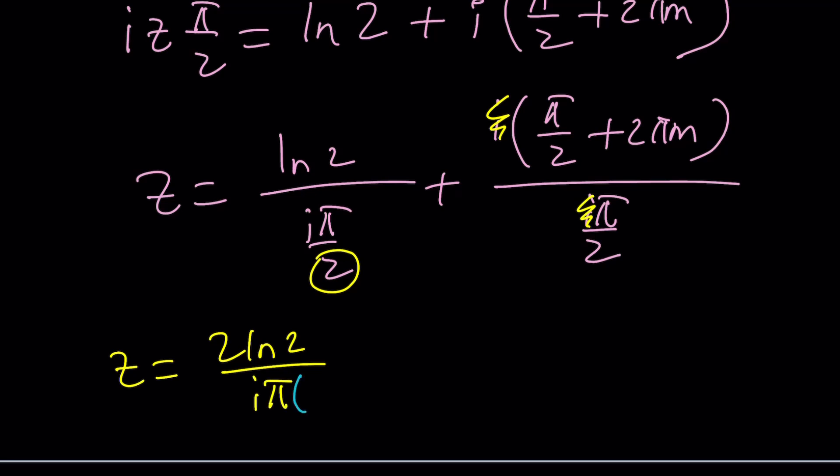And at this point, I can go ahead and multiply by negative i. I wouldn't divide by i. Or I wouldn't multiply by i. I would just multiply by negative i because negative i squared is 1. So I got rid of that. And we're going to have a minus sign.